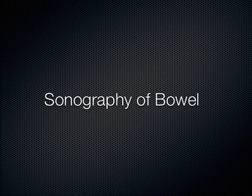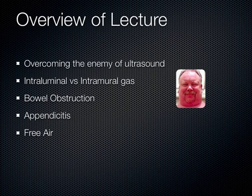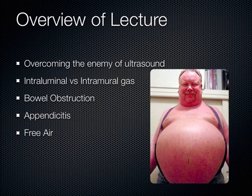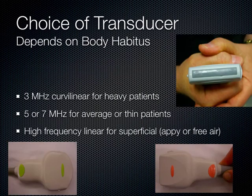Now we switch gears to talk about bowel. The enemy of ultrasound is bowel gas, and in some patients bowel distension is so significant that examining the bowel with ultrasound becomes very difficult. However, in other patients — even with significant pathology — we can get through and see their intestines quite easily. We'll cover bowel obstructions, where gas is located, and appendicitis.